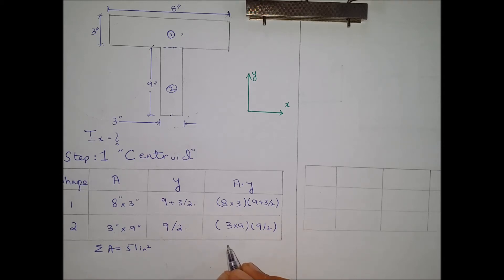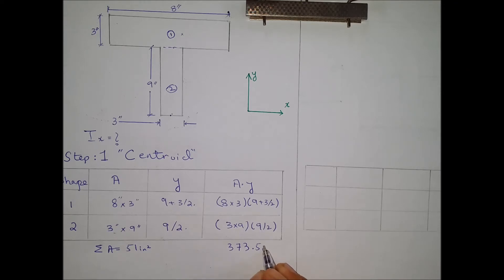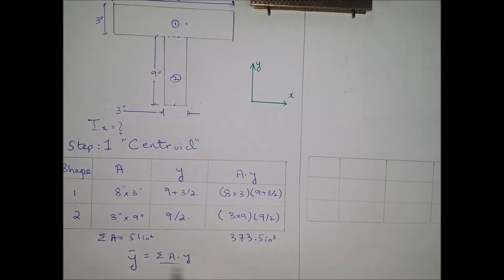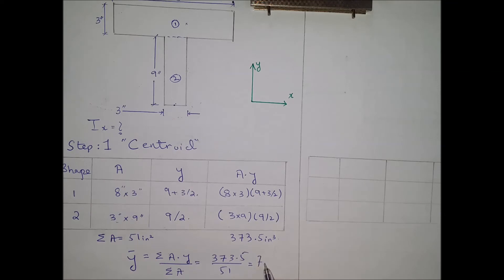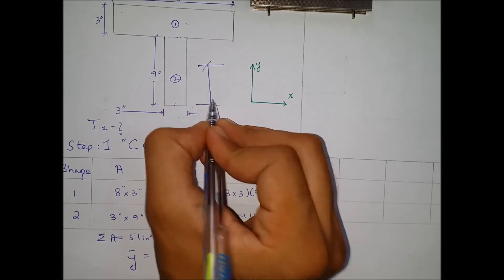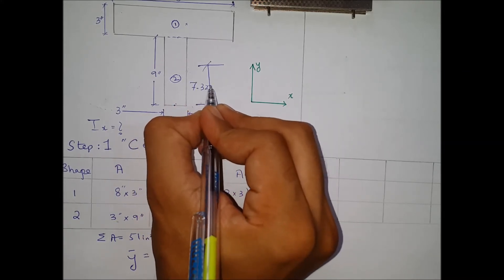This term sum gives us the numerator. For locating the centroid, we use the formula. We get 373.5 over 51. The centroid comes out to be 7.323 inches from the reference point. Locating this on the diagram, it would be somewhere here — 7.323 inches.